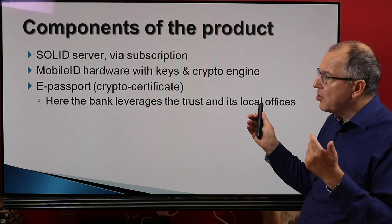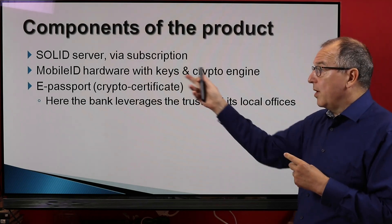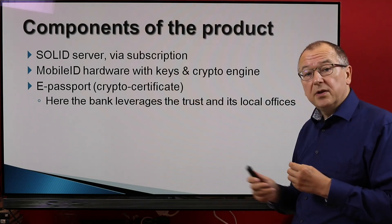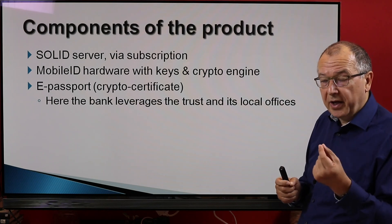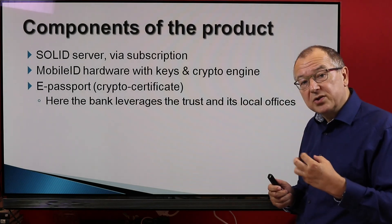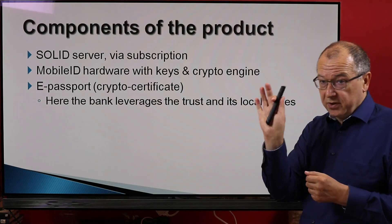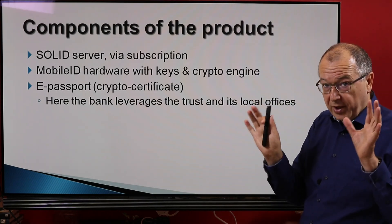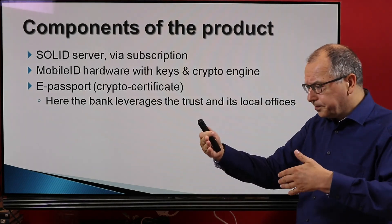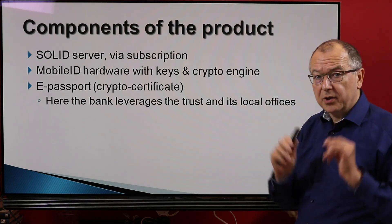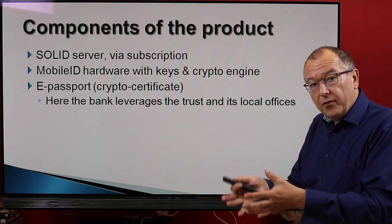Your product will actually be three products: you will sell a solid server subscription, you will sell mobile ID hardware, and you will sell an e-passport — a cryptography certificate. To deliver the cryptography certificate, the client has to visit the bank. So if your bank has offices, it's even better: the person comes in, shows their passport and birth certificate, and your staff check the documents and issue the electronic passport. You can leverage the existence of your local offices in the city.